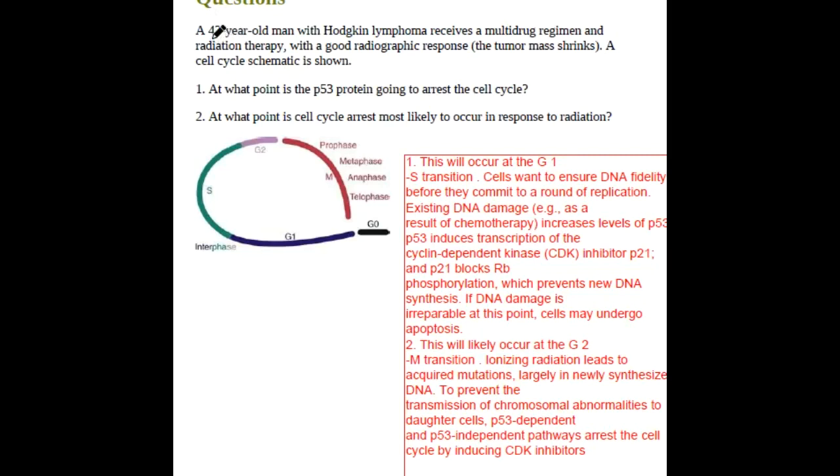Hello friends, welcome to a new lecture. A 42-year-old man with Hodgkin's lymphoma receives a multi-drug regimen and radiation therapy with a good radiographic response. A cell cycle schematic is shown in the picture. At what point is the p53 protein going to arrest the cell division?